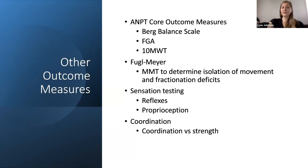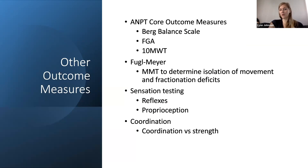Going through some other outcome measures you can use: obviously the Modified Ashworth Scale gives you an objective number that looks specifically at spasticity, but core outcome measures that are really important post-stroke include the Berg Balance Scale, the FGA, and the 10 Meter Walk Test. Throughout all of those, if you can complete them, you can also look for spasticity.